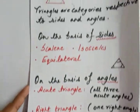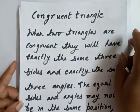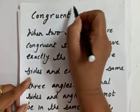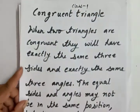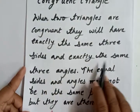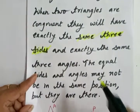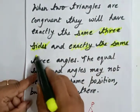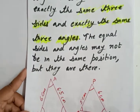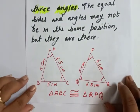Now let's come to congruent triangles. The word 'congruent' means exactly equal. We will see different types of definitions to make this clear. When two triangles are congruent, they will have exactly the same three sides and exactly the same three angles. The equal sides and angles may not be in the same position, but they are there. Let's understand with the help of an example - we have two triangles here.